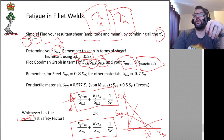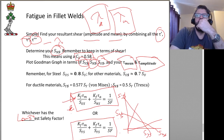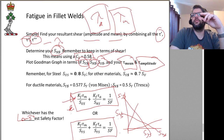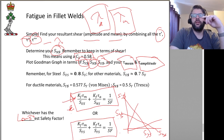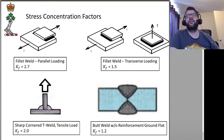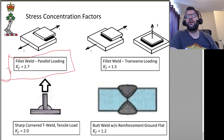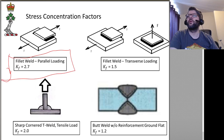As for the KF stress concentration factors — based upon the configuration of the weld: if we have loading parallel to the fillet weld, we use KF = 2.7. If we have transverse loading where the load is perpendicular to the fillet weld, we're looking at 1.5. If we have a sharp corner T-weld with a tensile load, it's a bit higher at 2.0.